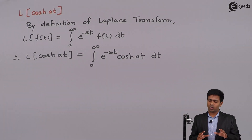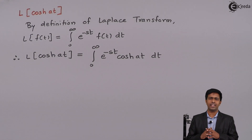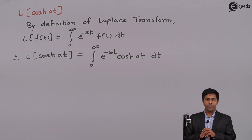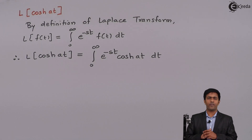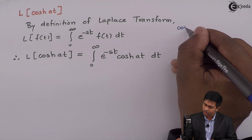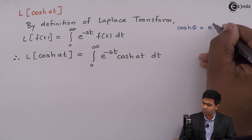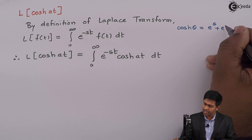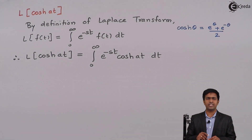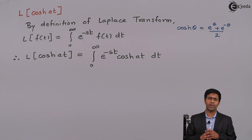To solve this integration of e raised to minus st times hyperbolic cosine at with respect to t, we will substitute the formula for hyperbolic cosine at. The hyperbolic cosine of theta is given by the formula: e raised to theta plus e raised to minus theta, all divided by 2. This is the general formula of hyperbolic functions in terms of exponential functions.